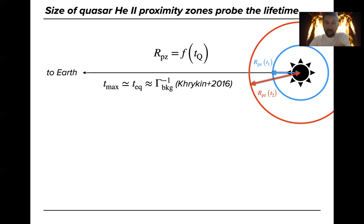Helium-two-proximity zone sizes depend on the Quasar Lifetime simply because the longer a quasar shines, the larger is this region of ionized helium around them. So the only remaining question is what is the size, how to define it.